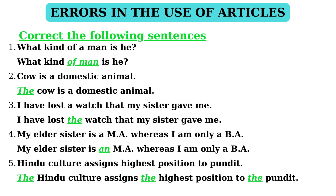Statement 1: 'What kind of a man is he?' — It's an incorrect statement. Here, 'a' is to be removed from the sentence because we need to omit 'a' for a common noun used in its widest sense. The correct statement is: 'What kind of man is he?'